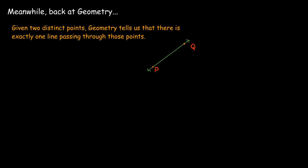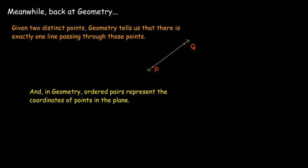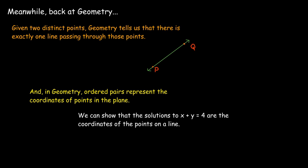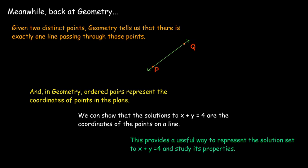In geometry, a line, as a geometric object, if you have two points, there's exactly one line that passes through those two points. So if we can show, and we can, that the solutions to an equation in two variables like x plus y equals 4 are the coordinates of the points on a line, then that gives us a useful way to show all of the solutions. If we can sketch the line in the plane corresponding to x plus y equals 4, then we've got a nice way of representing the solution set and a good way to study its properties.